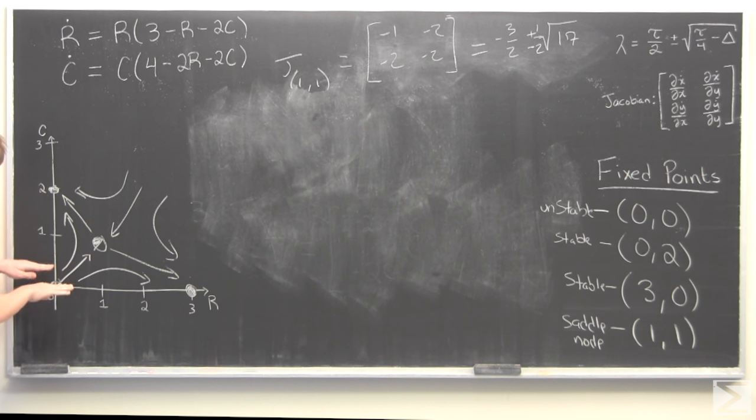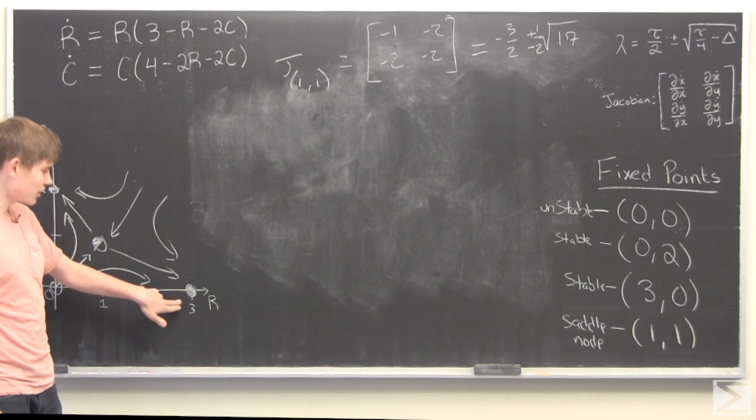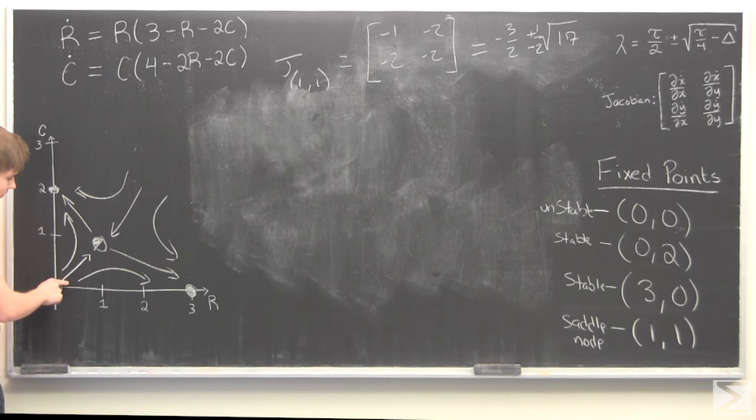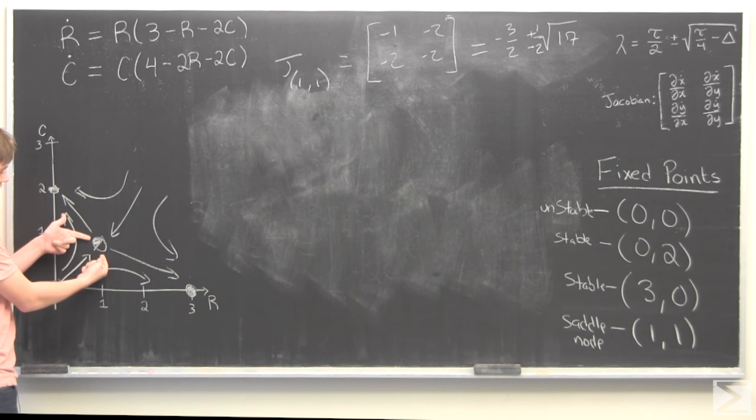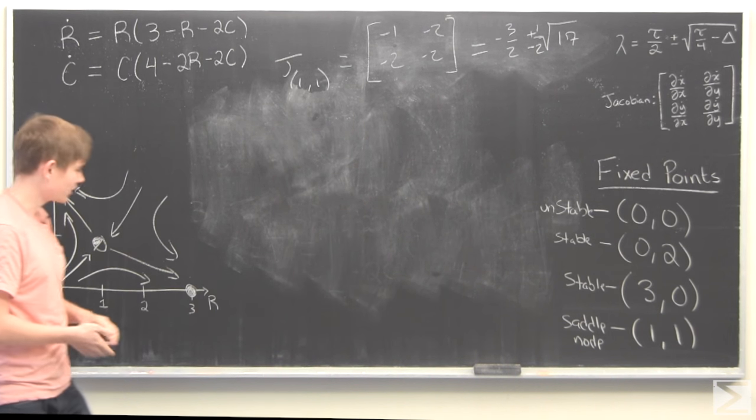And as you can see, what's most likely going to happen is you're either going to end up with a bunch of cows or you're going to end up with a bunch of rabbits. It's unlikely that you'll end up with this nice equilibrium of cows and rabbits.